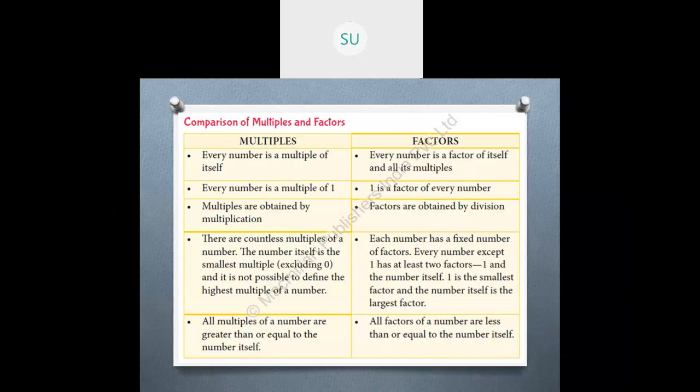Multiples are obtained by multiplication. Factors are obtained by division. There are countless multiples of a number — the number itself is the smallest multiple, excluding 0. 0 is never a multiple of any number. Since multiples are a product of the number with counting numbers, and there are infinitely many counting numbers, a number has countless multiples. But every number has a fixed number of factors, and every number except 1 has at least 2 factors: 1 and the number itself.